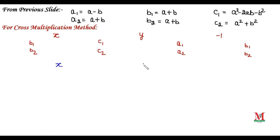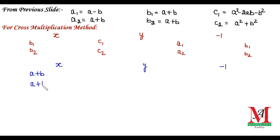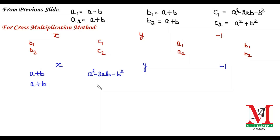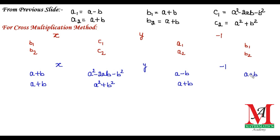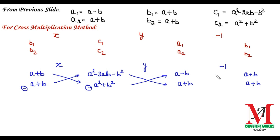Now we have the values of a1, b1, c1, a2, b2, c2 and we apply the cross multiplication method as shown on the screen. Putting all the values: c1 is a² − 2ab − b², c2 is a² + b², a1 is (a − b), a2 is (a + b), b1 is (a + b), and b2 is (a + b). We multiply in the way you see on screen — we follow this method across all cross multiplication method questions.